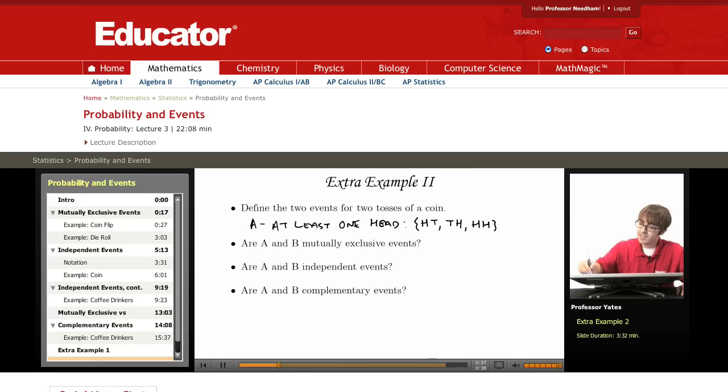And then let's say event B, I'll write B up here, B is that both tails are obtained. So in other words, B is T and T.